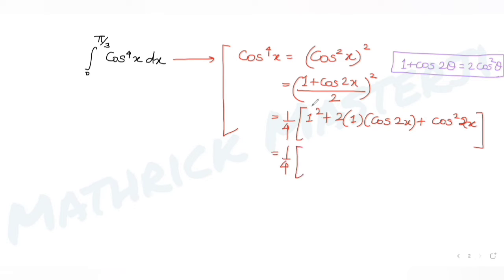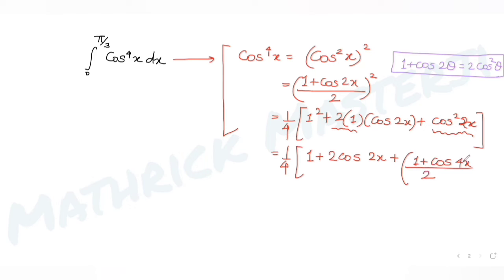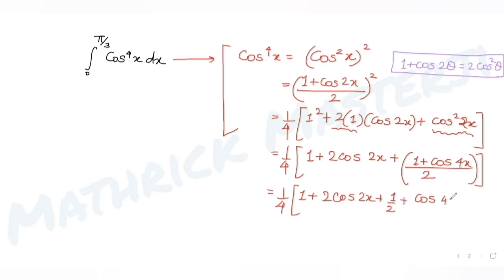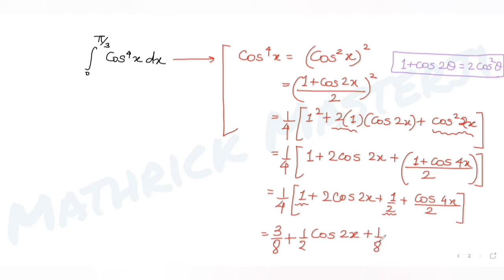Substituting cos²(2x) = (1 + cos4x)/2, we get (1/4)(1 + 2cos2x + (1 + cos4x)/2). Simplifying: 1 + 1/2 = 3/2, so we get 3/8 + (1/2)cos2x + (1/8)cos4x.